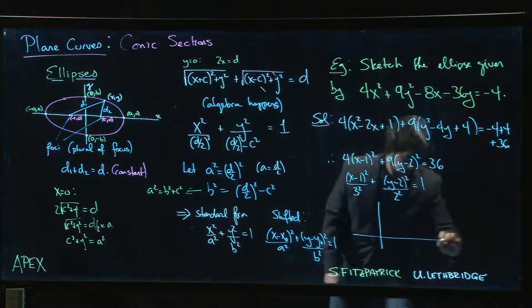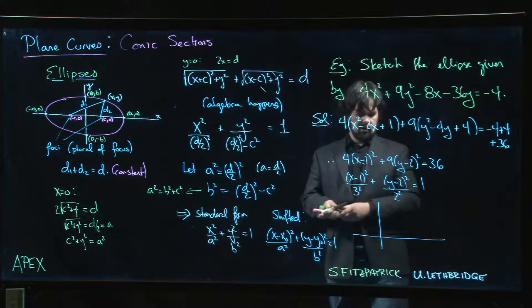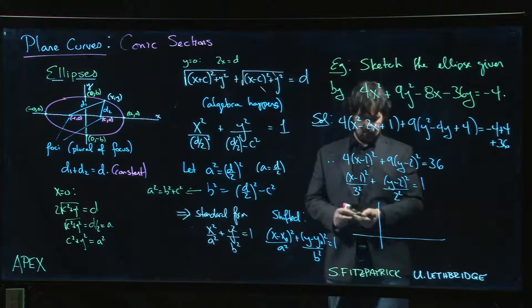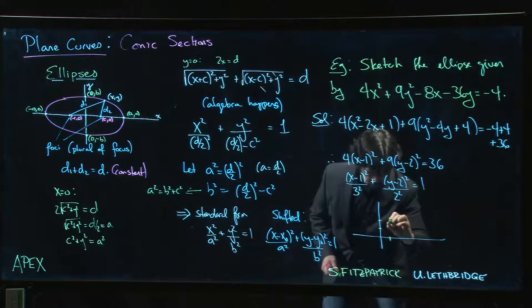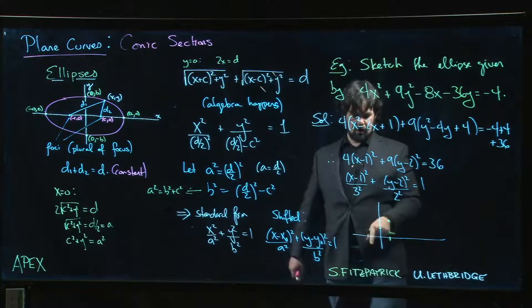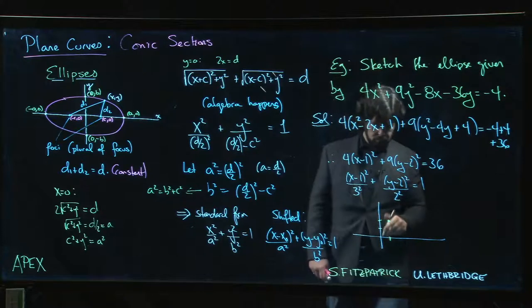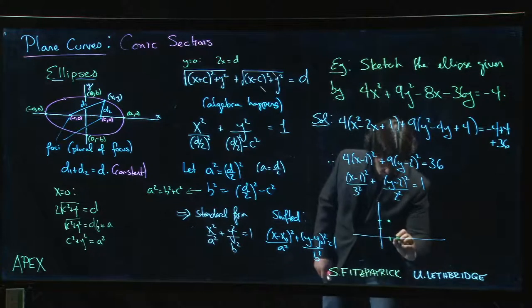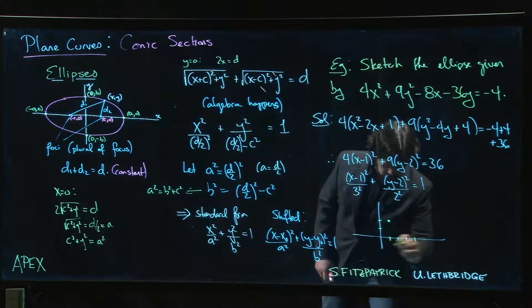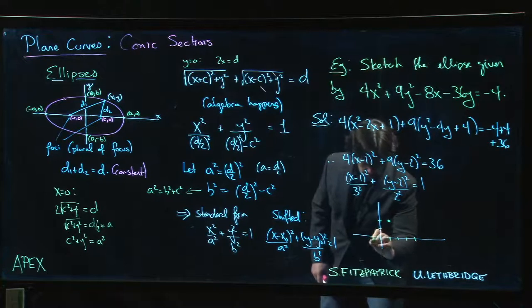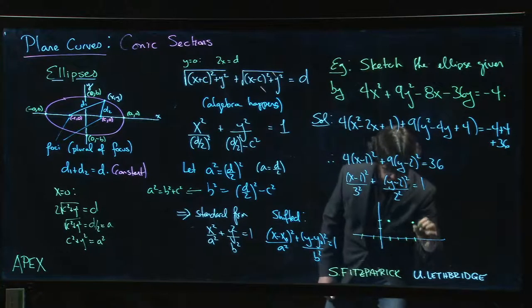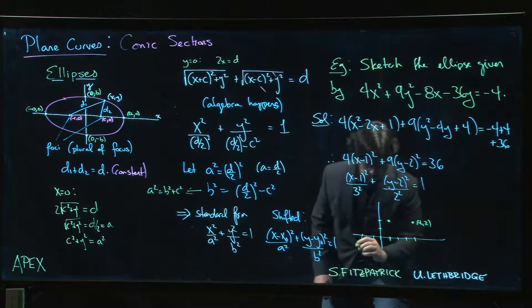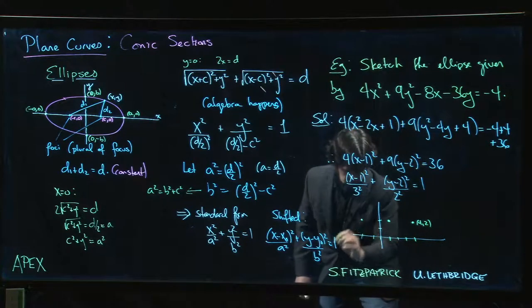So what do we know? We know that the center is at the point (1, 2). There's our center. We know that a is equal to 3, so we go 1, 2, 3... 1, 2, 3, we get those two points. So that's going to be at (4, 2) over here at...